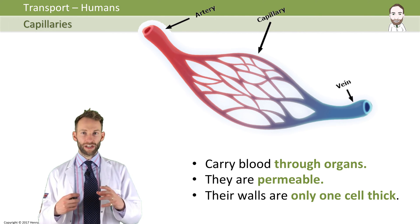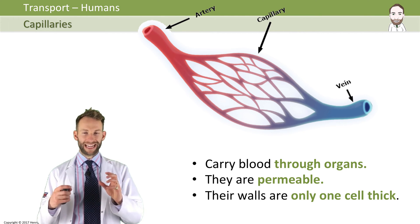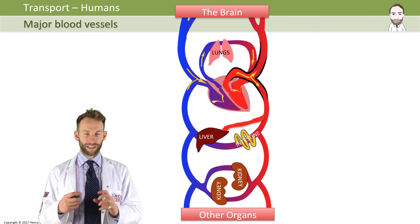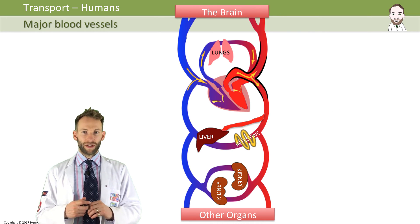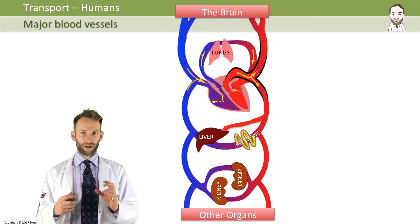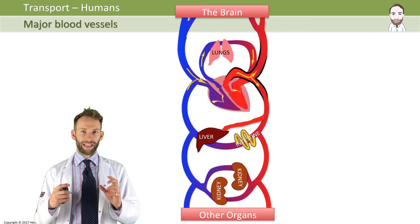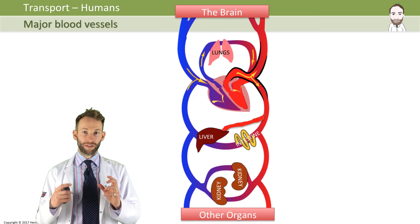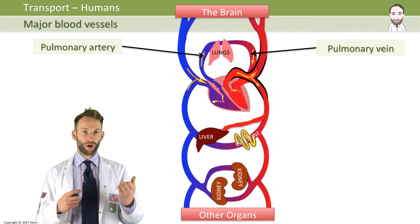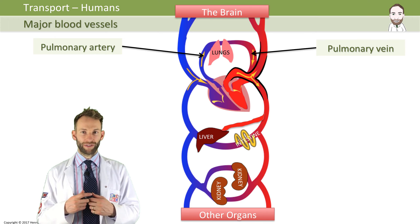You need to know about the major blood vessels that supply the major organs in the body. The blood vessels that supply the lungs are called the pulmonary artery and the pulmonary vein.